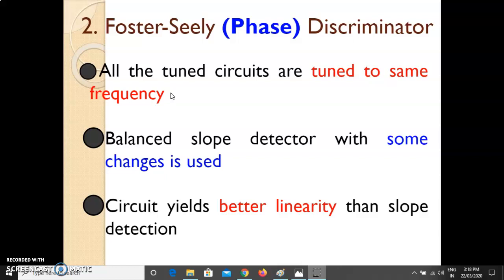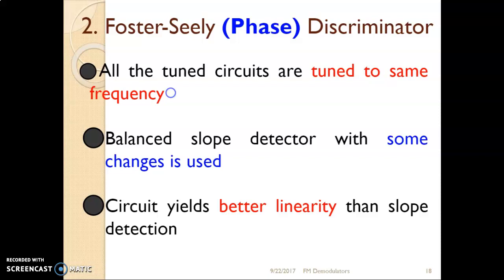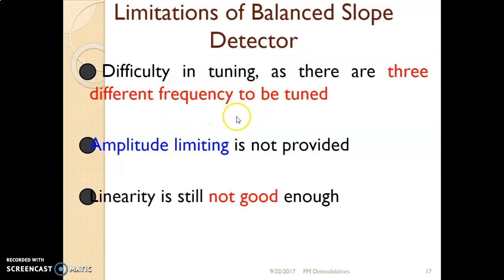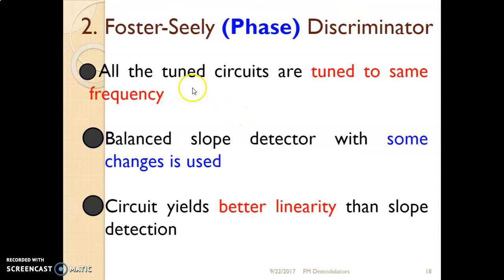In the Foster-Seeley discriminator, all the tuned circuits are tuned to the same frequency. In the balanced slope detector, the upper tuned circuit was tuned to Fc plus delta F and the lower to Fc minus delta F, which was highlighted as a disadvantage — it is very difficult to tune all three circuits to different frequencies. That disadvantage is avoided in the Foster-Seeley discriminator.